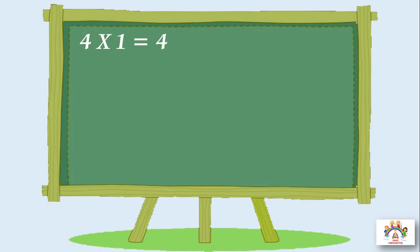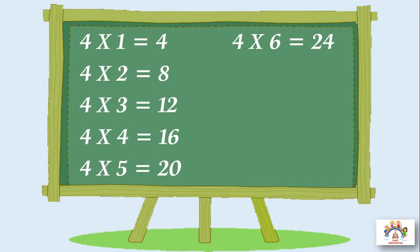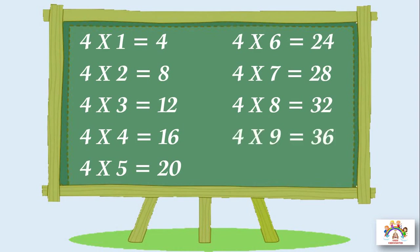4 ones are 4, 4 ones are 4. 4 twos are 8, 4 twos are 8. 4 threes are 12, 4 threes are 12. 4 fours are 16, 4 fours are 16. Four fives are twenty, four fives are twenty. Four sixes are twenty-four. Four sevens are twenty-eight. Four eights are thirty-two. Four nines are thirty-six. Four tens are forty.